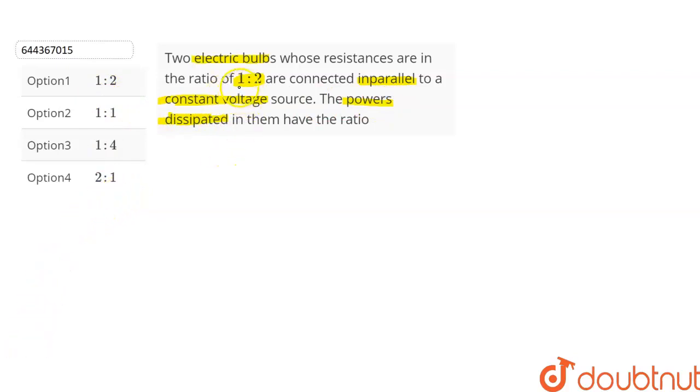The ratio of resistance is 1:2. So let the resistance of first bulb be R1 and the resistance of second bulb be R2. It is given that the ratio R1 to R2 is equal to 1 upon 2. Let this be the first equation.